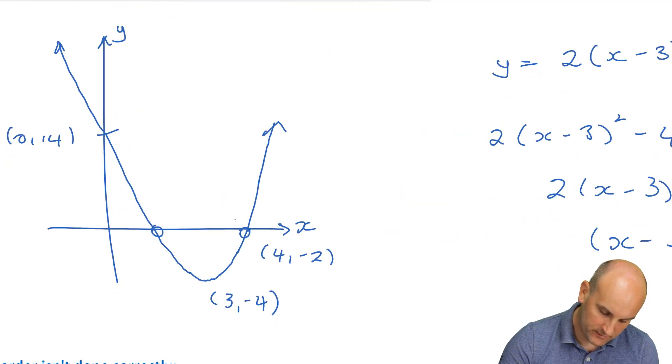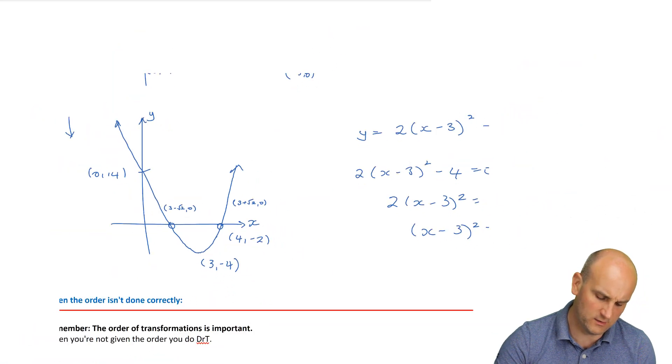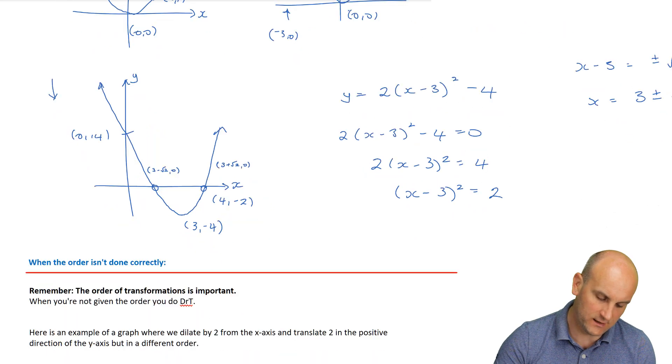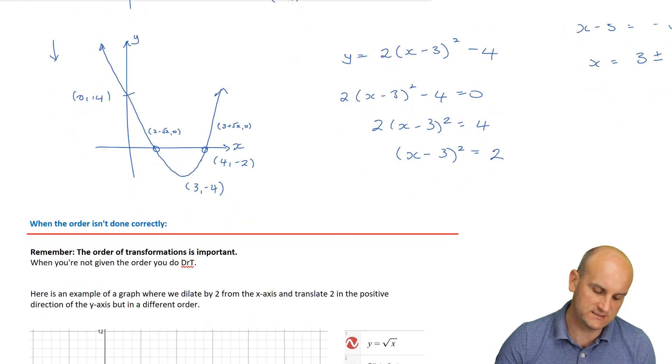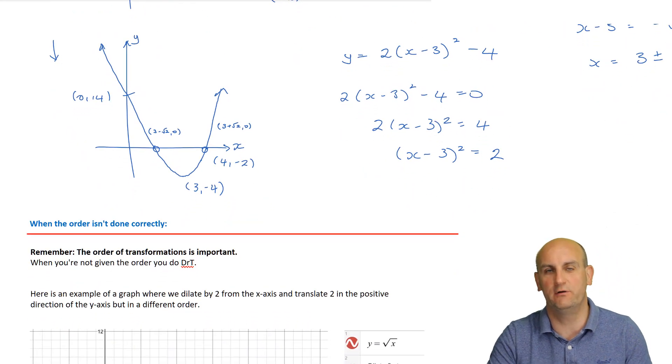So using that information, I would then write it onto my graph. This one here is going to be three plus root two comma zero. And this one here is going to be three minus root two comma zero. And lo and behold, ladies and gentlemen, I have doneeth my graph sketching. All the important pieces of information are on there.